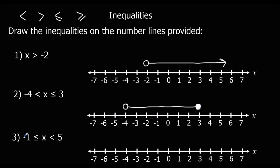Here x is bigger or equal to minus 1, so there's minus 1 — it can equal it, so I'm going to colour it in. And it's less than 5, so it can't equal 5, so I'm not going to colour it in. We join them up for a line.